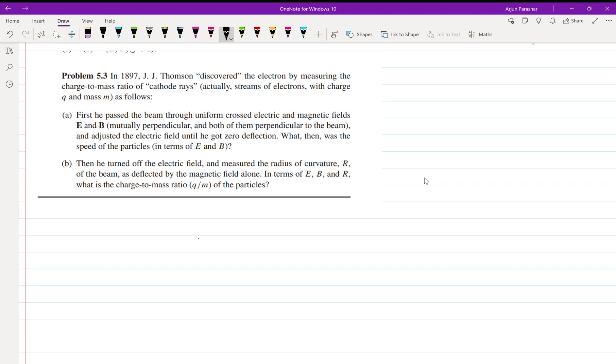Okay, so hello everyone, welcome back. Now let us start Problem 5.3, which says that in 1897, J.J. Thomson discovered the electron by measuring the charge-to-mass ratio of cathode rays.